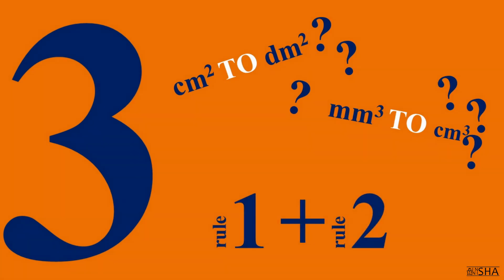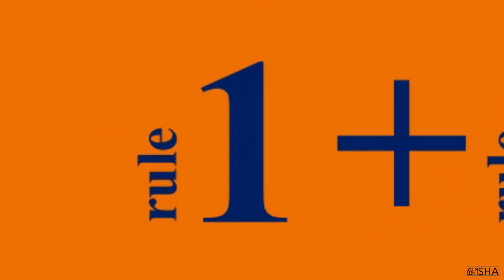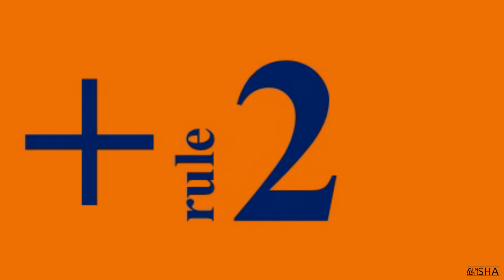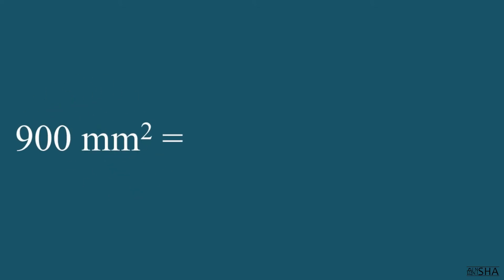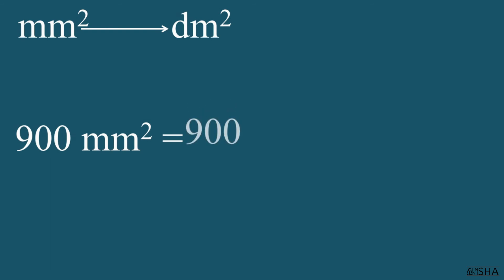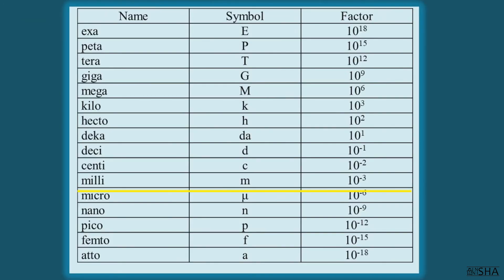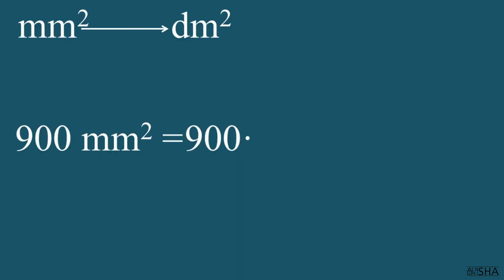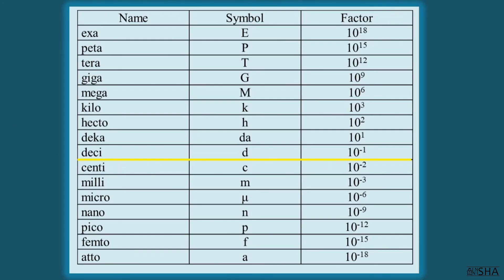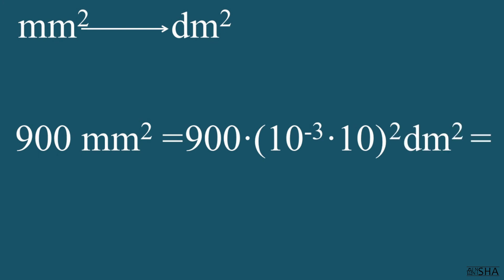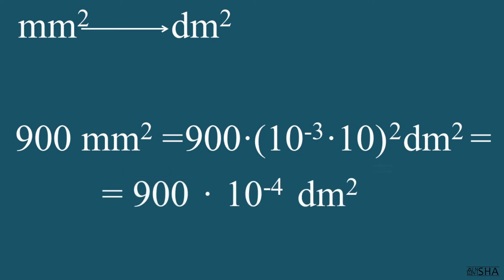At first, you'll need to convert units to the SI system according to rule one, and then to the other units according to rule two. Let's try to convert 900 square millimeters to square decimeters. 900 we multiply by the factor of the prefix milli, that's 10 to the negative 3rd power — we have converted to meters. And now, according to the second rule, we multiply by the factor of the prefix deci with changing the sign of its power, which is 10 to the first power. Now we raise these factors to the second power, giving us square decimeters. 900 times 10 to the negative 4th power square decimeters.